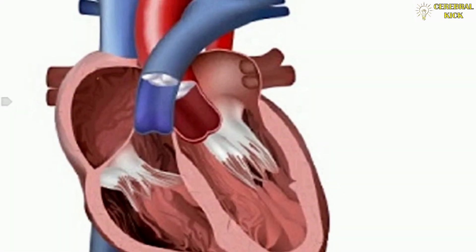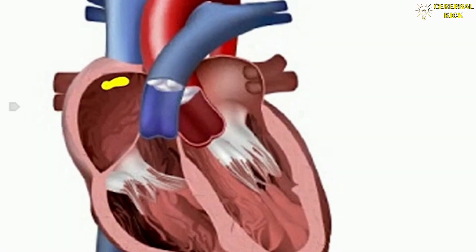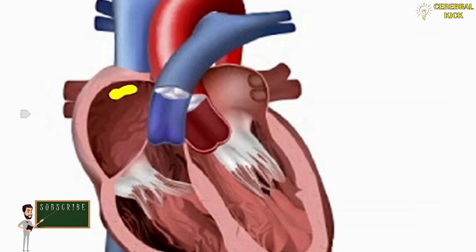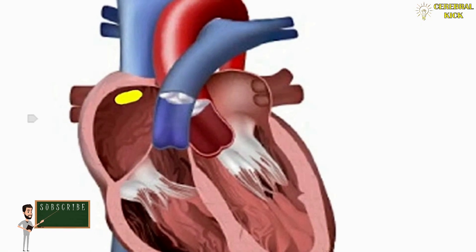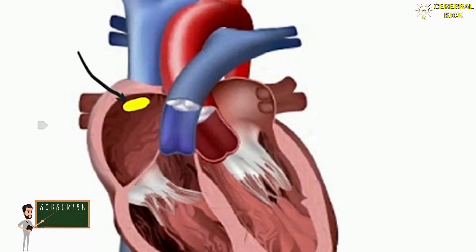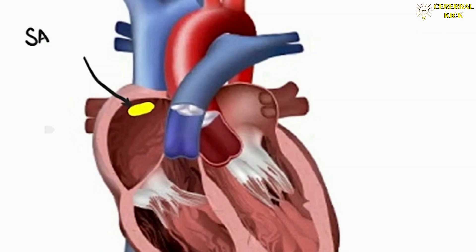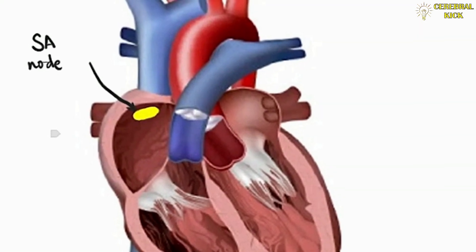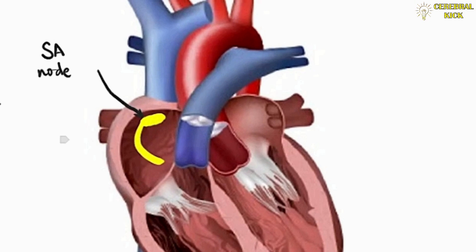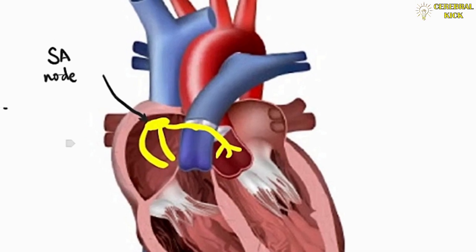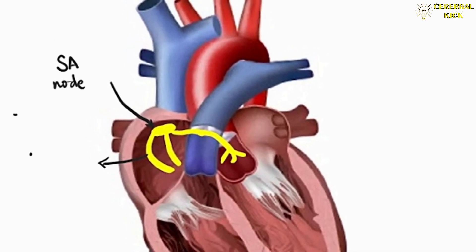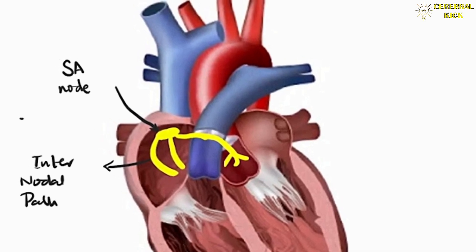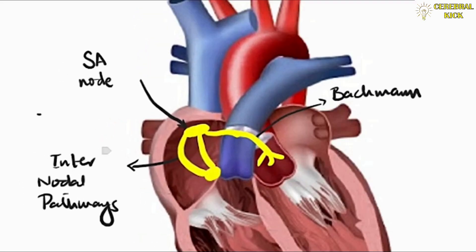The conduction system of the heart consists of very specialized cells which conduct the electrical impulse into the muscles of the heart in a very synchronized way, which is nothing short of a miracle. It begins with the SA node, or the sinoatrial node, located at the junction of the right atrium and superior vena cava on the inner side. The SA node transmits this impulse through the internodal pathways distributed through the right and left atrium, including the Bachmann bundle which goes into the left atrium, until it ends at the AV node.